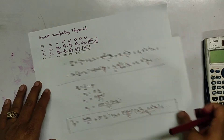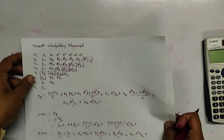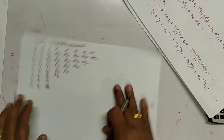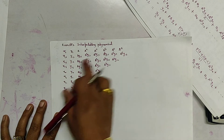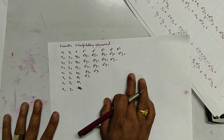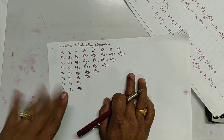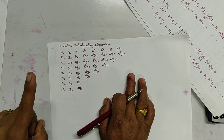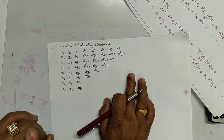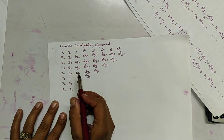Now we will be deriving the interpolating polynomial for Everett's interpolation. This is the difference table as used previously in Gauss forward and backward interpolation. Note that Everett's interpolating polynomial is taken from the even-difference part only, so del-power-0, del-power-1, del-power-2, del-power-3, del-power-4, del-power-5, del-power-6 — only even powers are taken.